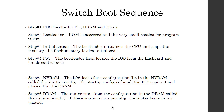It goes to the NVRAM. NVRAM is non-volatile RAM — it's stored on the motherboard, probably powered through a CMOS battery, so that when you shut the switch off it does not lose its information. On the NVRAM, if there's a configuration file there, it's called the startup configuration. The startup configuration is then copied into regular RAM, or DRAM, and it's called the running configuration.